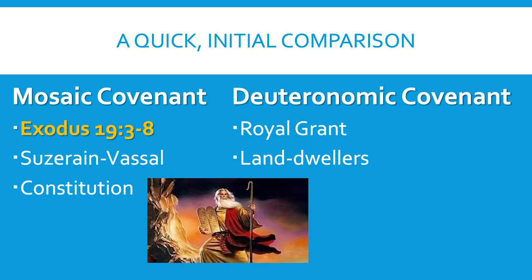You can see on this next slide — entitled 'A Quick Initial Comparison' — the Mosaic Covenant appears in Exodus, but also in Leviticus and in Numbers, and then the Deuteronomic Covenant appears, of course, obviously in the book of Deuteronomy. The prophets of the Old Testament often would cite the Deuteronomic Covenant when they warned the children of Israel that they needed to get right with God lest they be deported, because the Deuteronomic Covenant was the land-dwellers agreement.